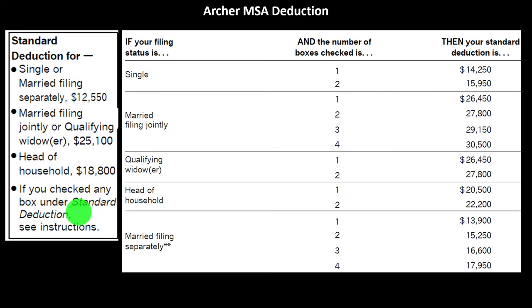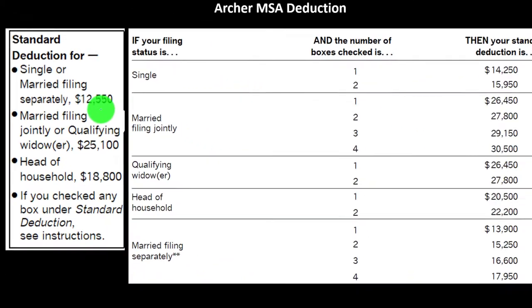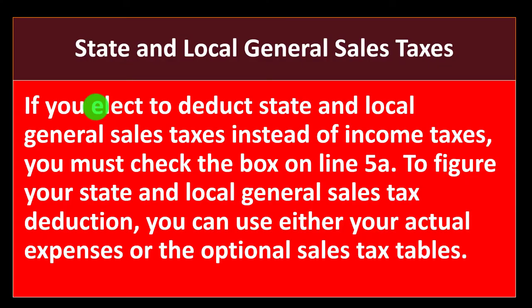These are the standard deductions that you want to have a general idea of, so that you can answer questions and run through different scenarios — basically determining whether someone is going to be itemizing or taking the standard deduction. So we're continuing on with the state and local taxes.